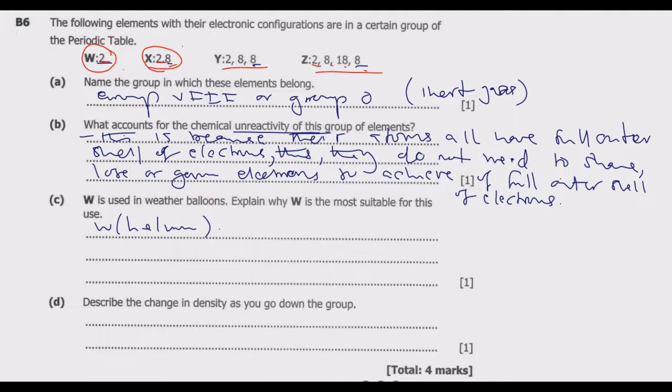This is because W has low density compared to air, hence is able to float in the air because its density is lower than that of air.